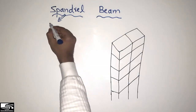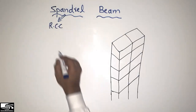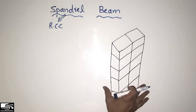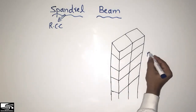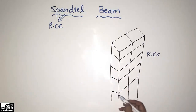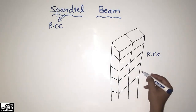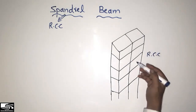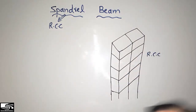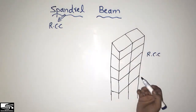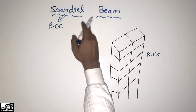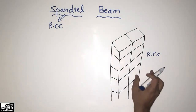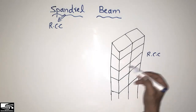The spandrel beam is mostly provided in RCC buildings, or where there is a multi-story building. For example, consider an RCC multi-story building having different floors — the first floor, the second floor, the third floor, the fourth floor — and it may be a high-rise building having 50 or 100 floors. We use the spandrel beam mainly in high-rise buildings.